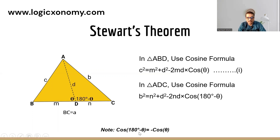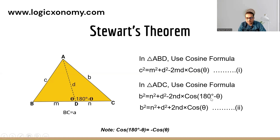As we know, cos(180 − θ) is equal to minus cos θ, because 180 − θ is in the second quadrant and in the second quadrant cosine is negative. So cos(180 − θ) becomes minus cos θ, and the two negatives multiply to give a plus sign. So equation 2 becomes: b² = d² + n² + 2nd·cos θ.